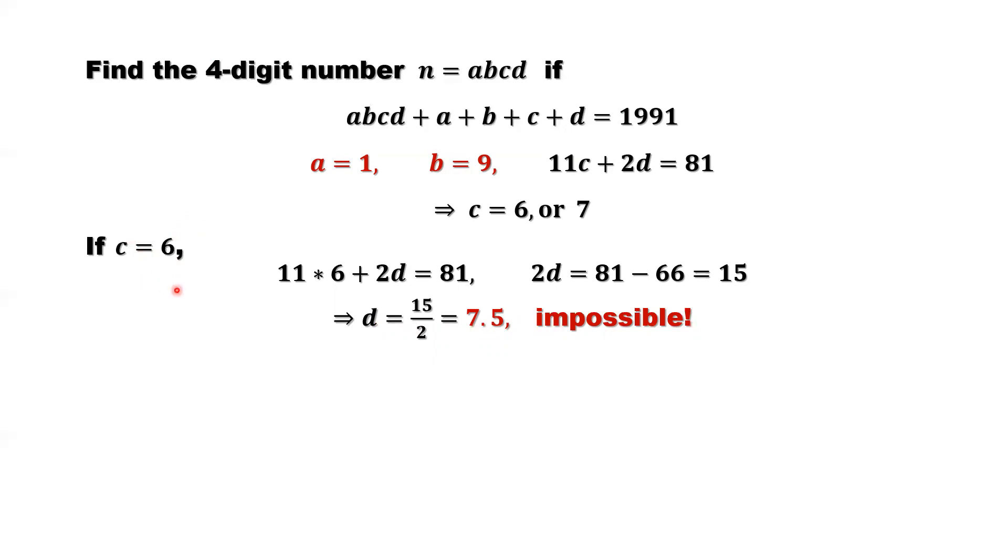C can be 7. Look at 7. If 7 is possible. If C equals 7, repeat the same procedure we did here for C equals 6. We replace C by 7. We solve this equation. We can find 2D equals 4. 2D equals 4. D equals 2. So you can see. We find the C equals 7 and D equals 2.